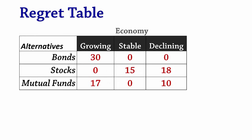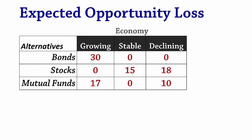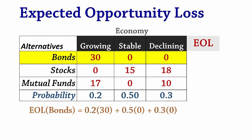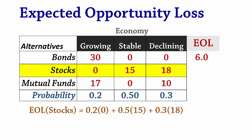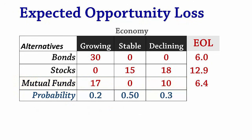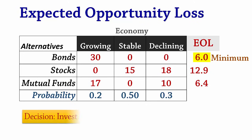To make decisions using the expected opportunity loss approach, we calculate the weighted average of the regrets for each decision alternative. The weights are the probabilities of the different states of nature or outcomes. For bonds, the expected opportunity loss is 0.2 times 30 plus 0.5 times 0 plus 0.3 times 0, which equals 6. For stocks, the EOL is 0.2 times 0 plus 0.5 times 15 plus 0.3 times 18, which gives 12.9. For mutual funds, the EOL equals 6.4. We always make our decision by choosing the alternative with the minimum EOL, and that decision in this case is to invest in bonds.